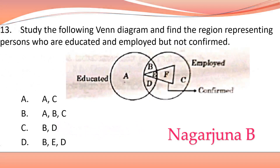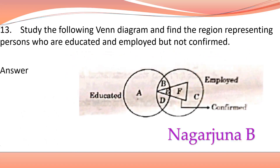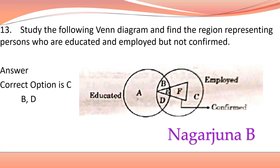The next question requires you to identify, based on the Venn diagram, who are educated and employed but not confirmed. The answer will be B and D. E will not come because it is confirmed, and option C will not come because it is confirmed. Therefore, the answer is B and D.